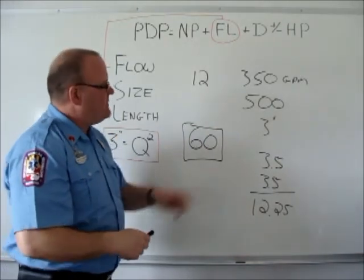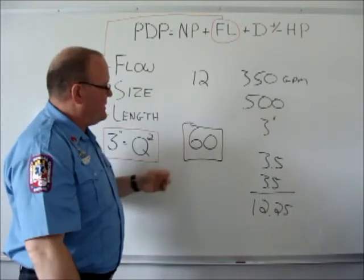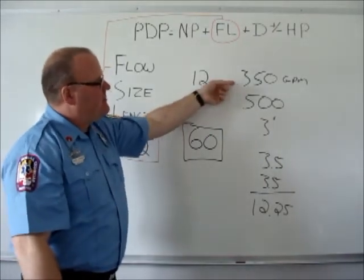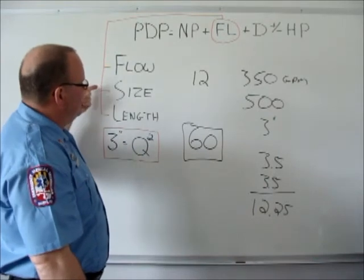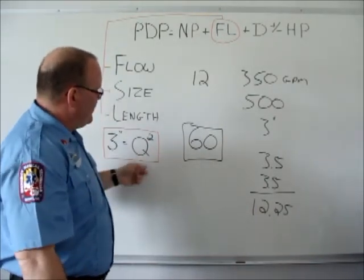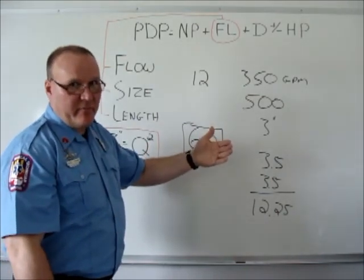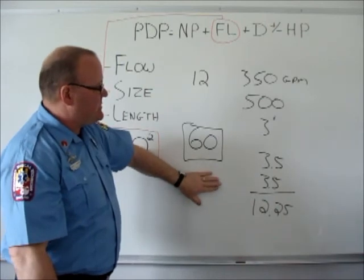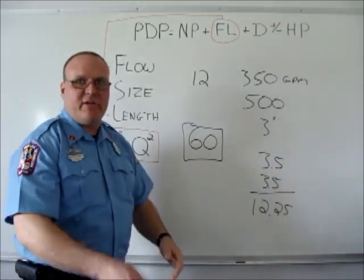So very quick and easy method. It's a refresher for most pump operators to use this method, but the Q-squared: the flow divided by 100 becomes the Q. You account for the size, 3-inch is the Q-squared, and the length of hose, you multiply the number you come up with during the Q-squared times the length of hose divided by 100. That would give you your total friction loss for 3-inch hose and a given hose length. That's today's training minute.